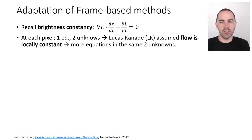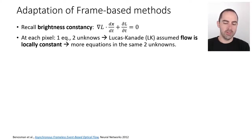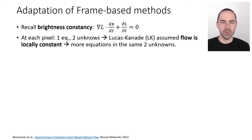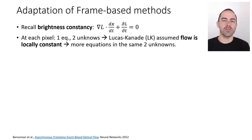What Lucas-Kanade proposed was to assume that flow is locally constant. Instead of considering a single pixel, you consider all its neighbors — say nine pixels sharing the same optical flow. Now you have nine equations and two unknowns, and you can find a least-squares solution after analyzing the system.